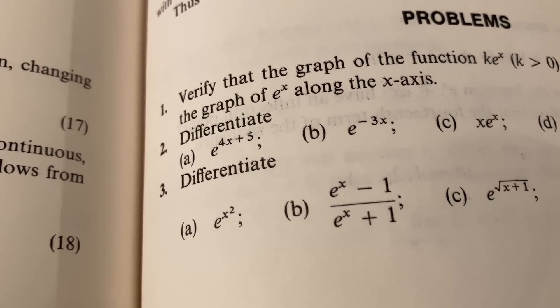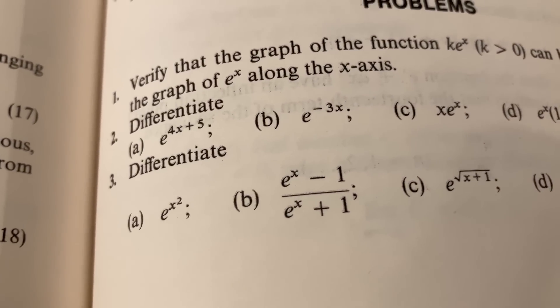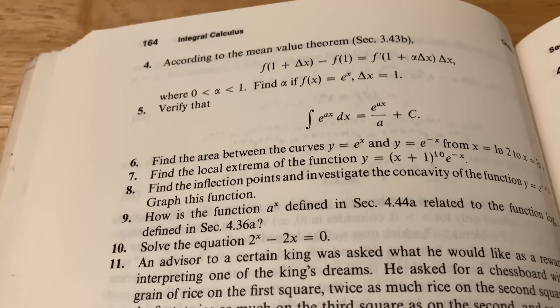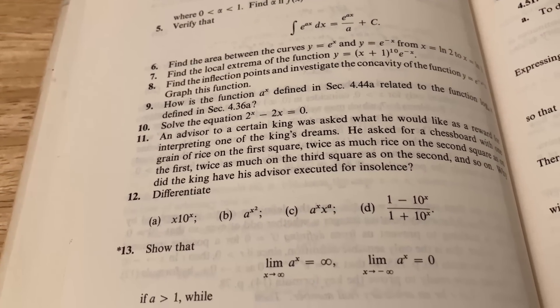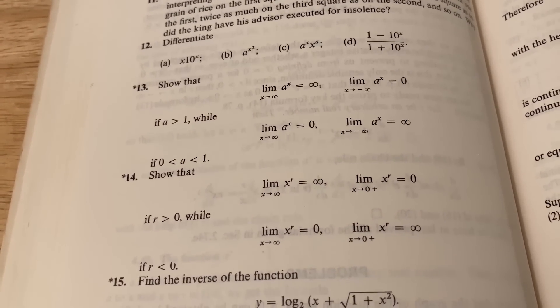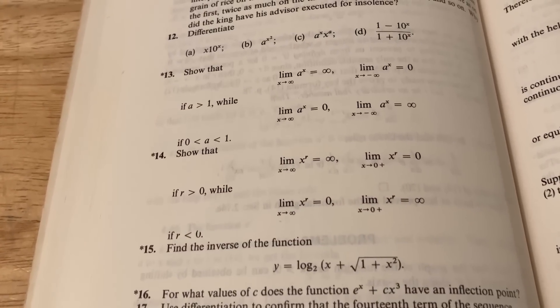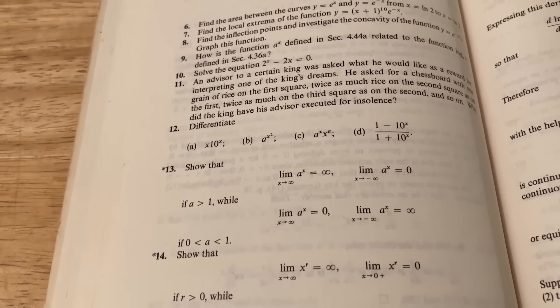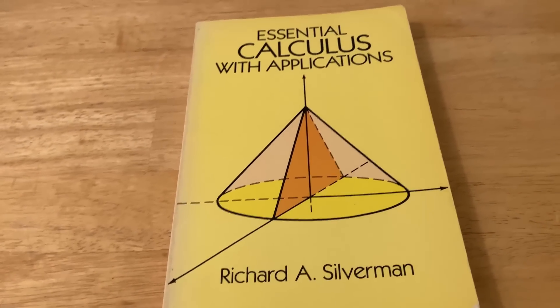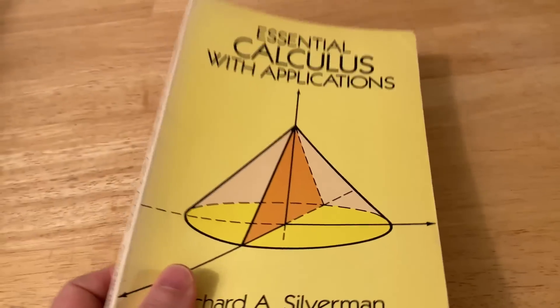Here we can see some more examples of the problems. Here we have to differentiate, so part a we would use the chain rule, b would be the quotient rule, and then c and d also some chain rule action going on. Here's a look at the rest of the exercises for this particular section, so you do get some good problems and then you have some proofs here as well. Modern books just tend to have more problems which are really good and useful for learning mathematics because you learn a lot of math by actually doing math.